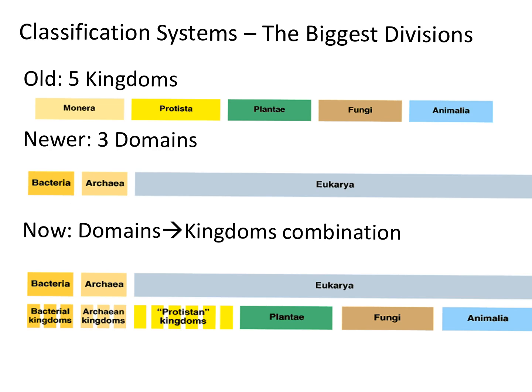Currently, taxonomists use a combination of these two systems. They first split organisms by domain — Bacteria, Archaea, and Eukarya — and then within that, they split them into kingdoms. So there are bacterial kingdoms, Archaean kingdoms, many Protista kingdoms, and the kingdoms for plants, fungi, and animals.